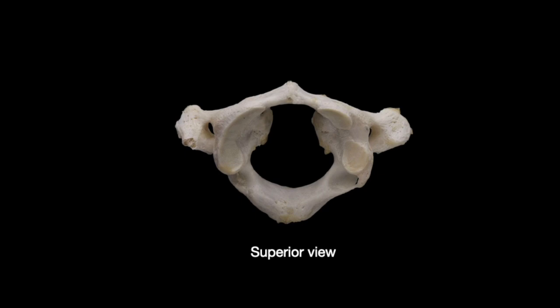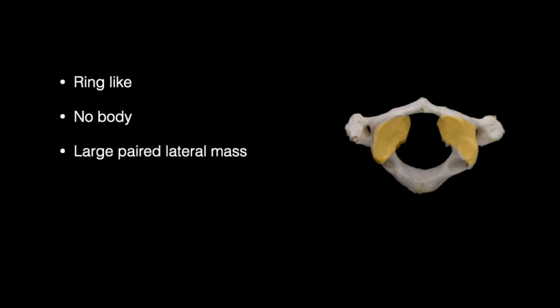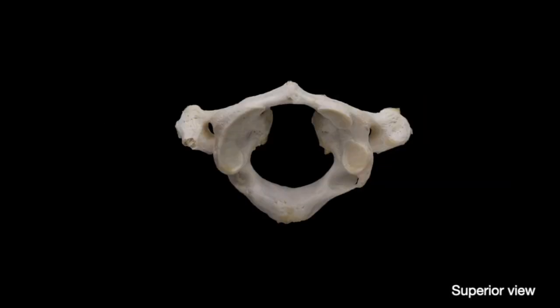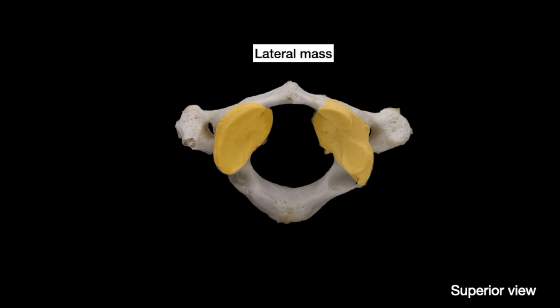There are three distinct features of C1: it is ring-like, has no body, and has large paired lateral masses. From the superior view, you can see anteriorly the anterior arch and posteriorly the posterior arch. Both arches are connected laterally with paired lateral masses.